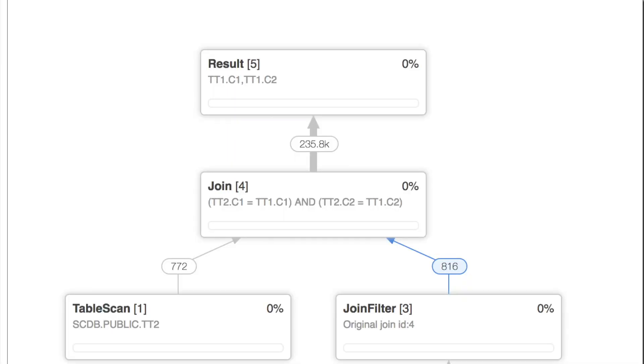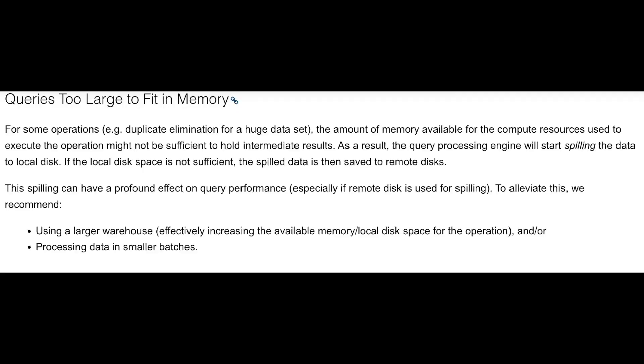Understand what an exploding join means and how to identify it in the query profile — essentially it's a Cartesian product. When you have a many-to-many join, it can be easily spotted in the query profiler. And touching back on caching in the query execution plan: when data is spilling, that means the virtual warehouse doesn't have enough memory to contain the result set, so it spills to disk — which shows up in the query profile.